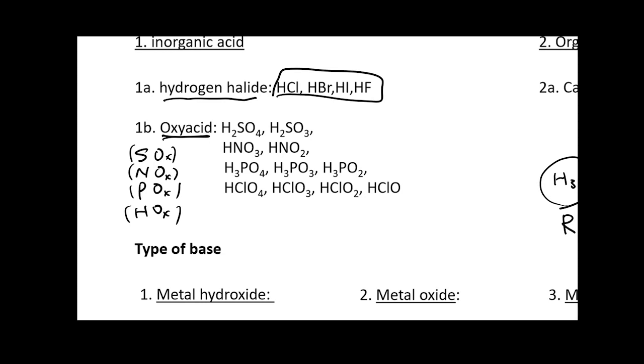For example, your H2SO4. You have SO4, SO3, NO3, NO2, PO4, PO3, PO2, ClO4, ClO3, ClO2, and ClO. So those are the typical features that once you see it in your chemical structures, you know it belongs to the acid group.